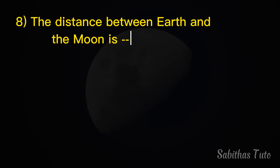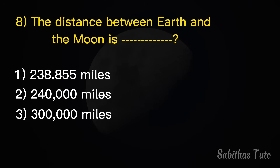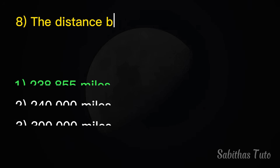Eighth question. What is the distance between the earth and the moon? The answer is 238,855 miles.